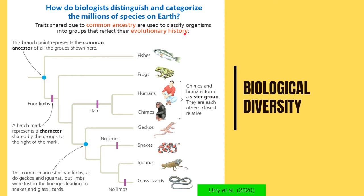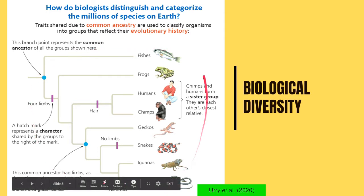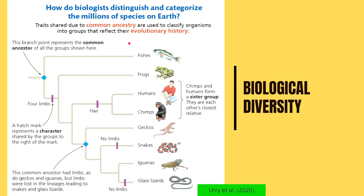To visualize all those relationships, biologists use evolutionary trees such as phylogenetic trees and cladograms. We will learn more about those as we go along.